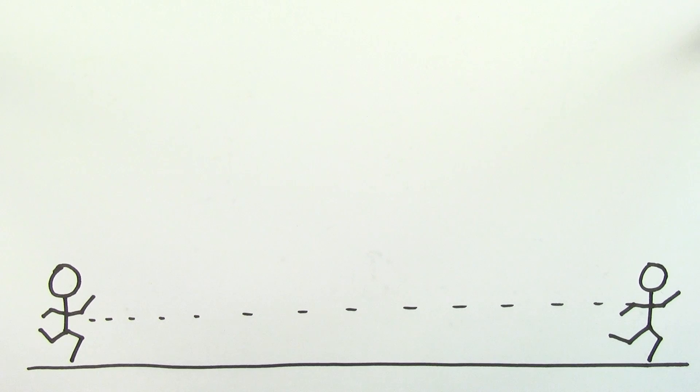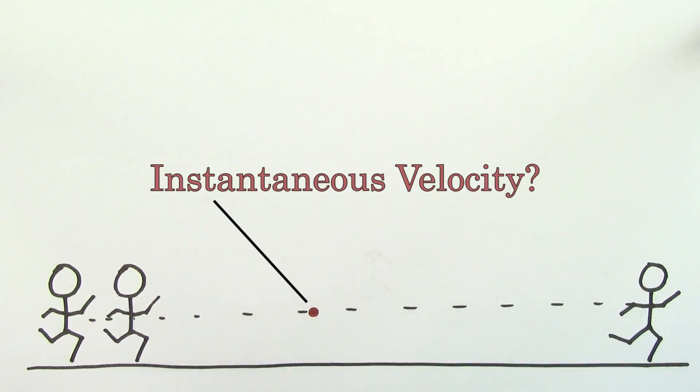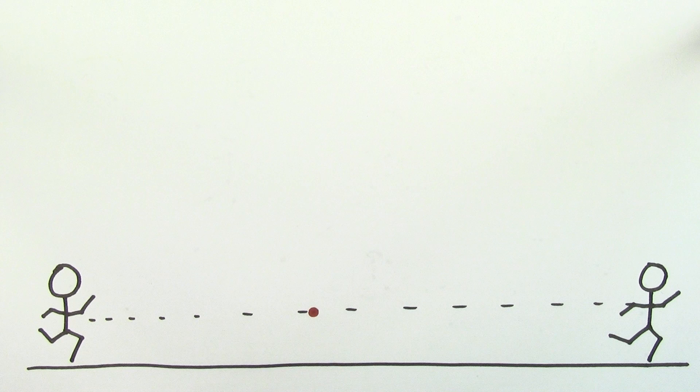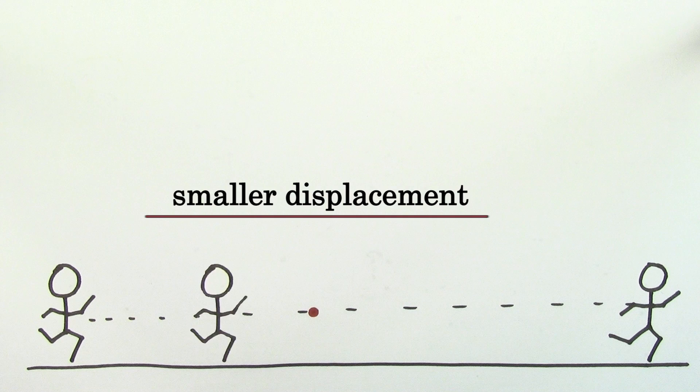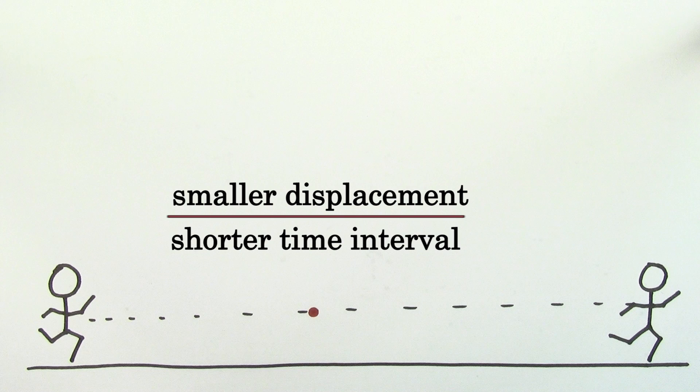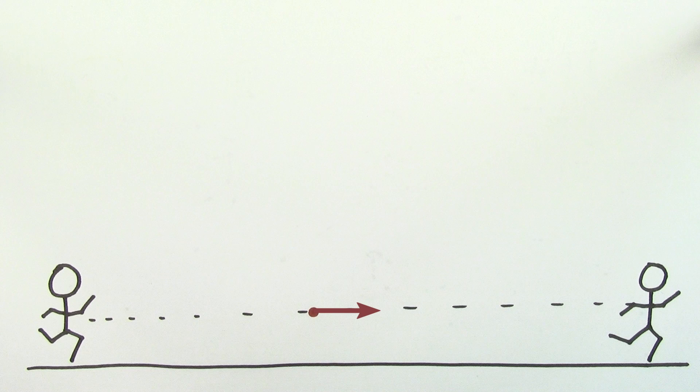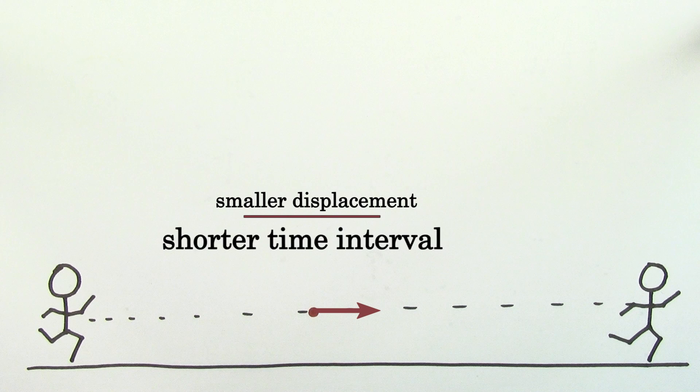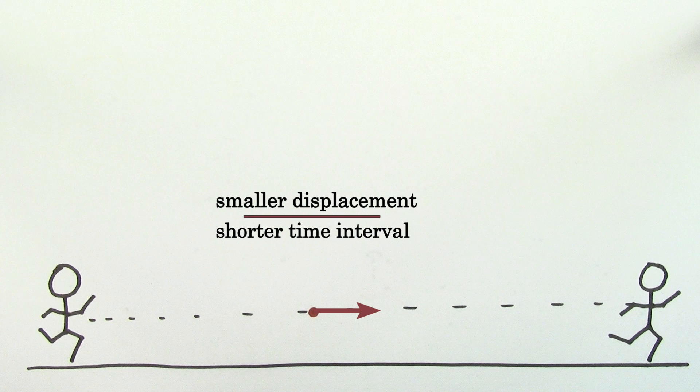Say you wanted to know the instantaneous velocity at a particular point in time during this trip. In that case, you'd want to find a smaller displacement over a shorter time interval that's centered at that point. This would give you a better value for the instantaneous velocity, but it still wouldn't be perfect. In order to better zero in on the instantaneous velocity, we could choose an even smaller displacement over an even shorter time interval.